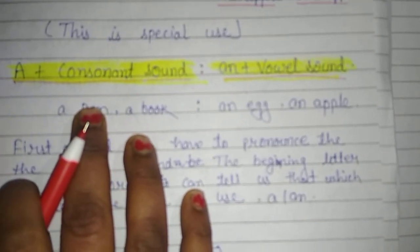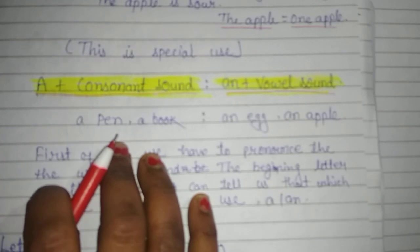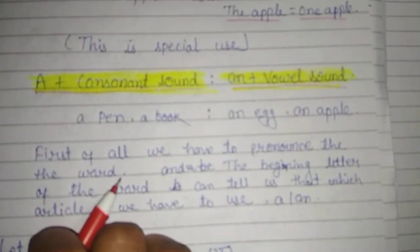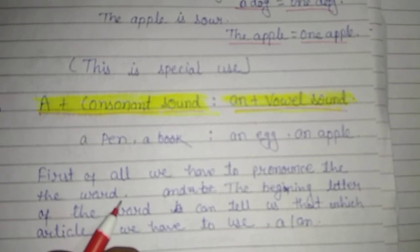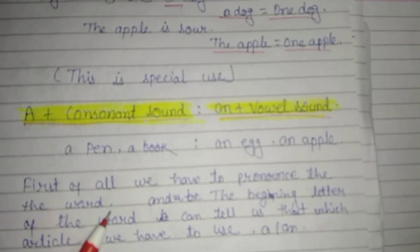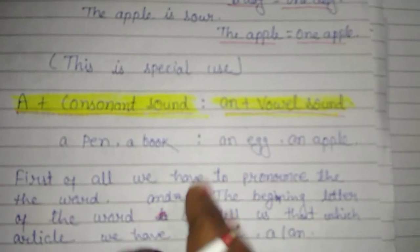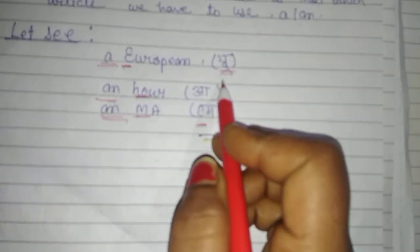How do we identify the sound? As we know, when we pronounce the word, the beginning letter of the word can tell us which article we have to use, 'a' or 'an'. Let's see: 'a European'. A European - here is 'E', the vowel letter, but 'E' is giving a sound 'U', which means consonant sound. 'E' is giving a consonant sound, so we can use before this 'E' the article 'a'.